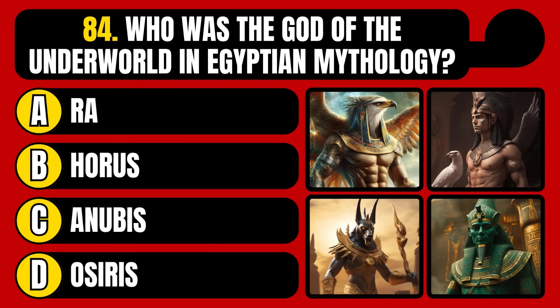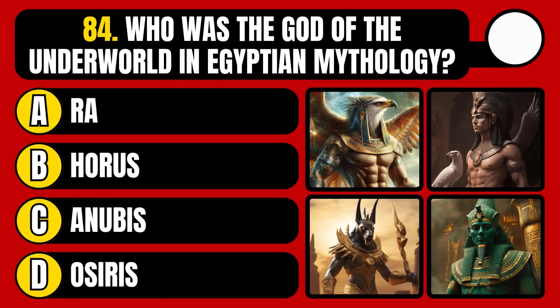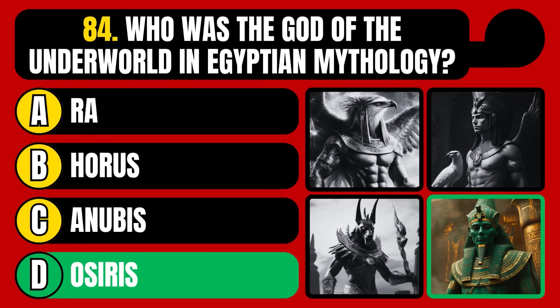Who was the god of the underworld in Egyptian mythology? Ra, Horus, Anubis, or Osiris? The correct answer is option D, Osiris.